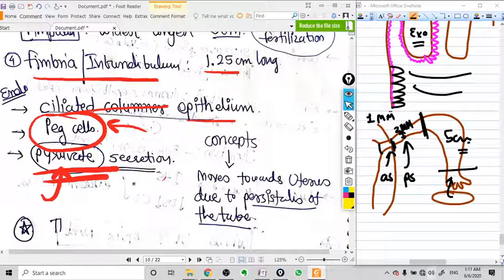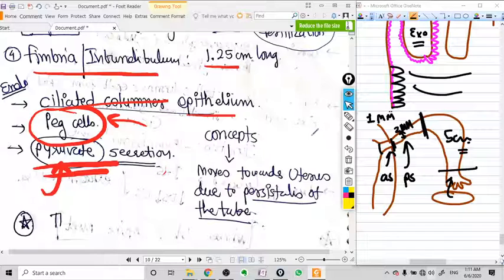Peg cells are very important. They secrete pyruvate, and pyruvate is a very important nutrient for ovum and embryo. That's why this site becomes very important. The tube has peristaltic movement so that the ovum and embryo can move to the uterus.